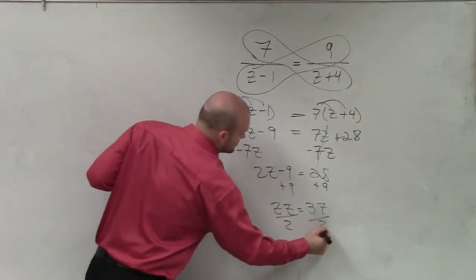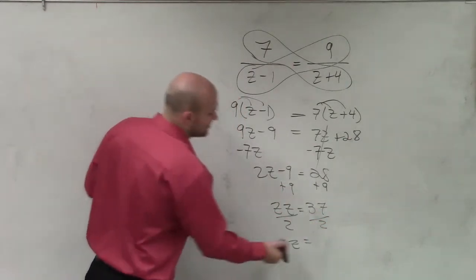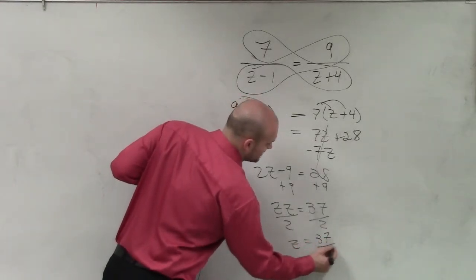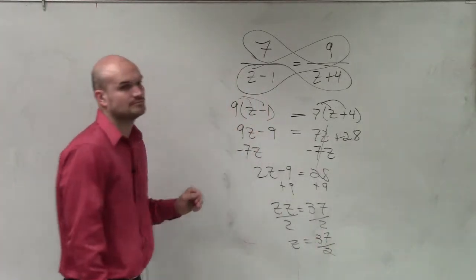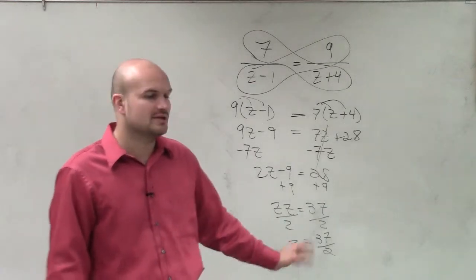Divide by 2, divide by 2. z equals, again, this is not something that we can simplify. So I'll just leave it as 37 divided by 2. OK? You could do 18.5, but I'm going to leave it as a fraction.